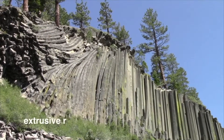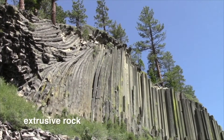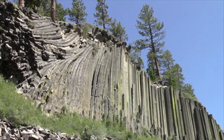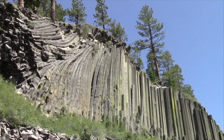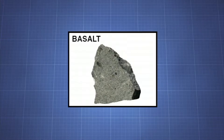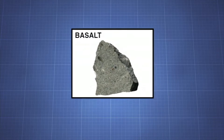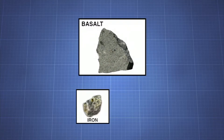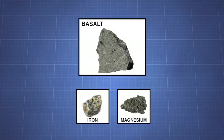Extrusive rock is the second major type of igneous rock. A landform known as the Devil's Postpile is composed of basalt, a common extrusive igneous rock. Basalt is a mafic rock, rich in iron and magnesium.